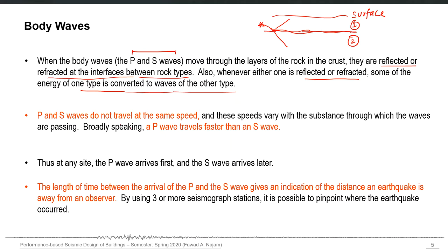P and S waves do not travel at the same speed. Generally, P waves have a higher speed compared to S waves, although the speed varies with the substance through which the waves are passing. At any particular site you will expect the P wave to arrive first and then the S wave later. The surface wave has a velocity even less than the S wave, so the surface wave will be the last to reach a particular site from the same earthquake.